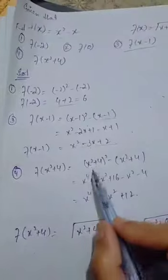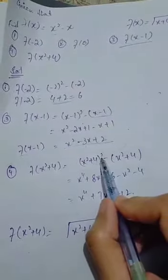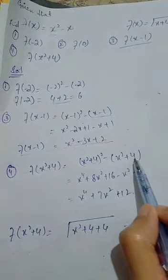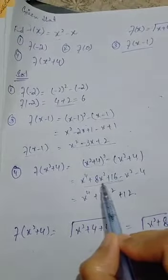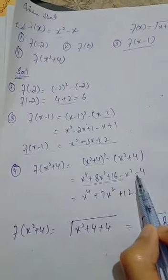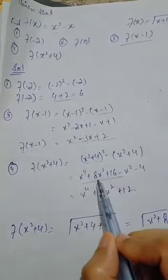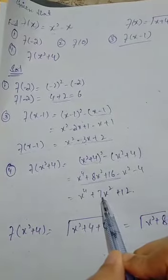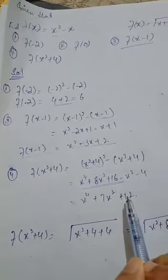This x will be replaced by x squared plus 4, and on top is square, so we have x squared plus 4 whole squared minus x squared plus 4. Using the formula a plus b whole squared, we get x to the fourth plus 8x squared plus 16 minus x squared minus 4, which simplifies to x to the fourth plus 7x squared plus 12.